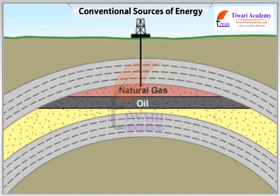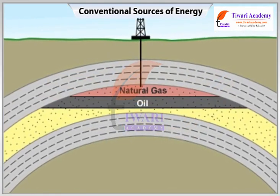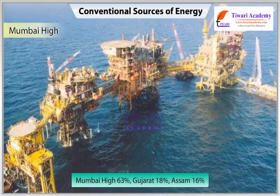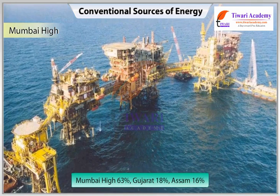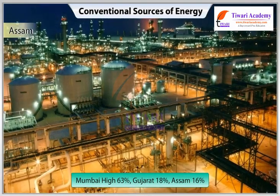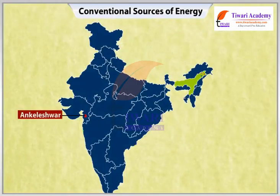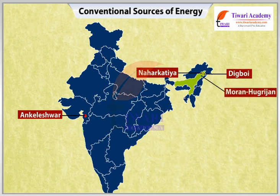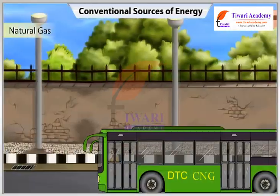Gas, being lighter, usually occurs above the oil. About 63% of India's petroleum production is from Mumbai High, 18% from Gujarat, and 16% from Assam. Ankleshwar is the most important field of Gujarat. Assam is the oldest oil-producing state of India; Digboi, Naharkatia, and Moran Hugrijan are the important oil fields in this state.